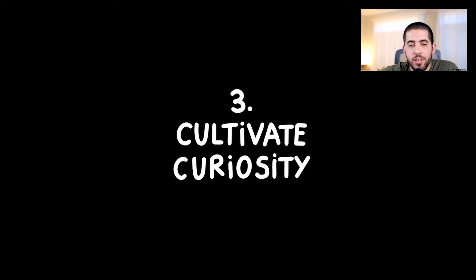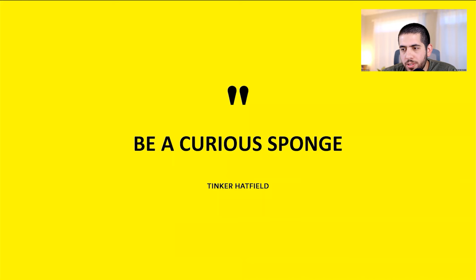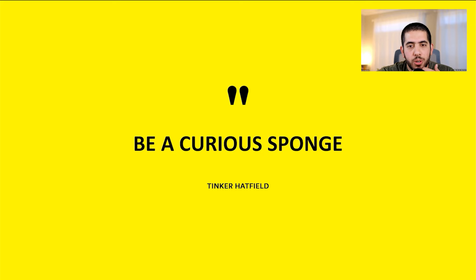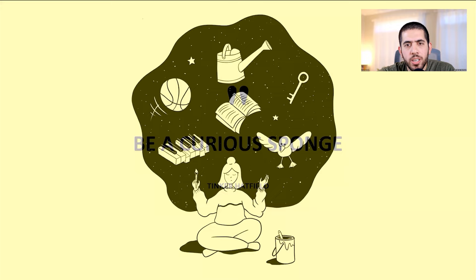The third insight is cultivate curiosity. When I was interning at Nike, I met with Tinker Hatfield — he's very well known in the footwear industry, responsible for designing many of the Air Jordans. He told me: be a curious sponge. By that, what he really means is just go everywhere, soak everything in, have an open mind. I could go to a basketball game, but instead of just watching, I'm listening to the fans, observing what everybody's wearing, looking at the lighting in the stadium. Be a curious sponge — be open to everything and let everything soak in. When you're a curious sponge, you're always observing and always questioning everything.